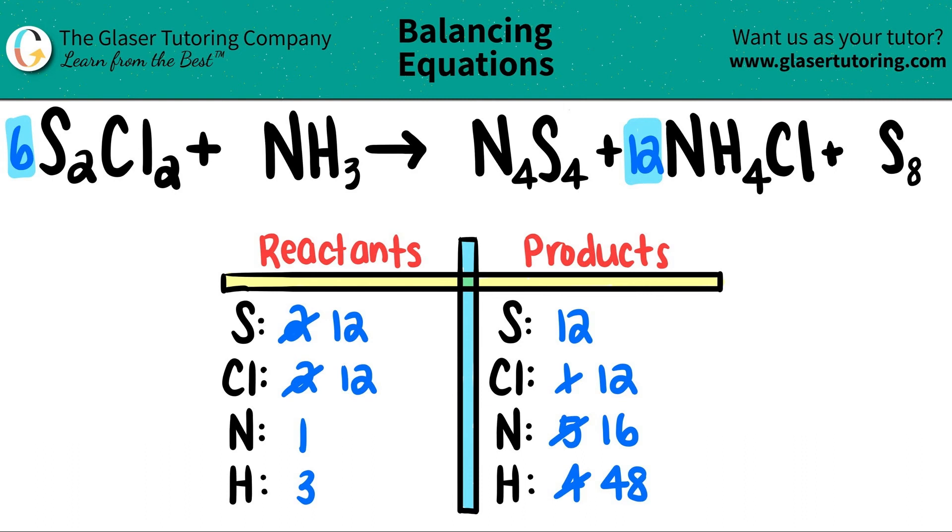Now let's keep working. Let's keep going down. Let's balance the nitrogen. One times what will get me 16? 16. And that's the number that goes in front of the compound that has the N. So I'm going to put a 16 here. But you got to be fair. You got to distribute that 16 to both the nitrogen and the hydrogen. So 16 times one for the nitrogen. That's 16. That's what we wanted. And 16 times three is 48. So no more three. 48.